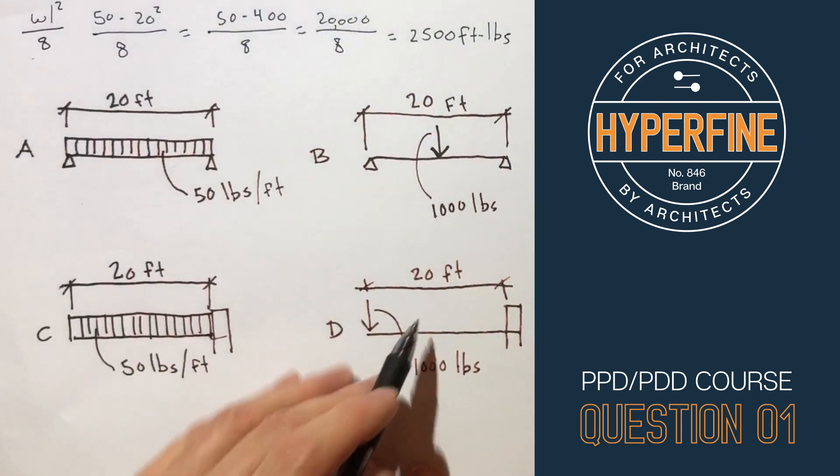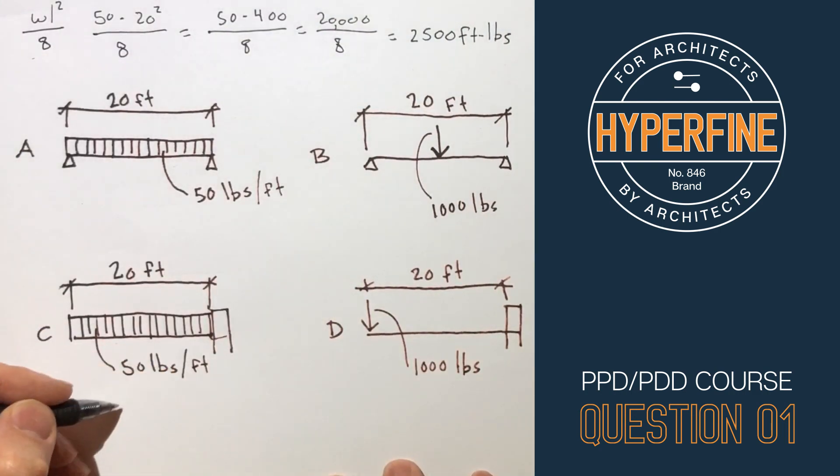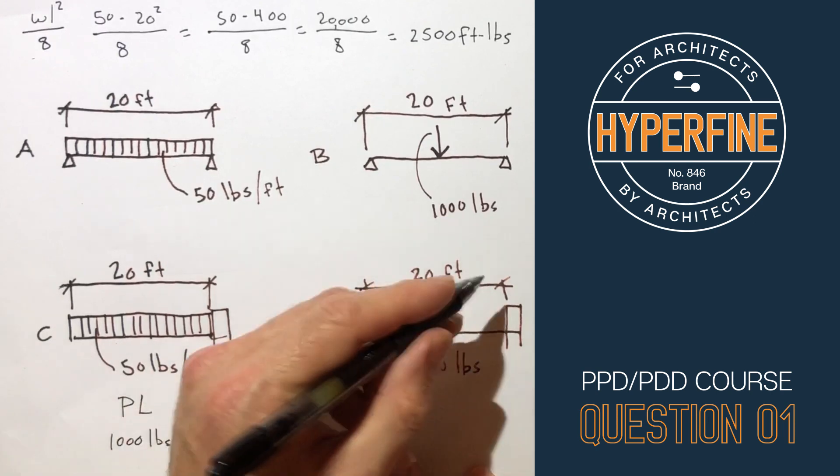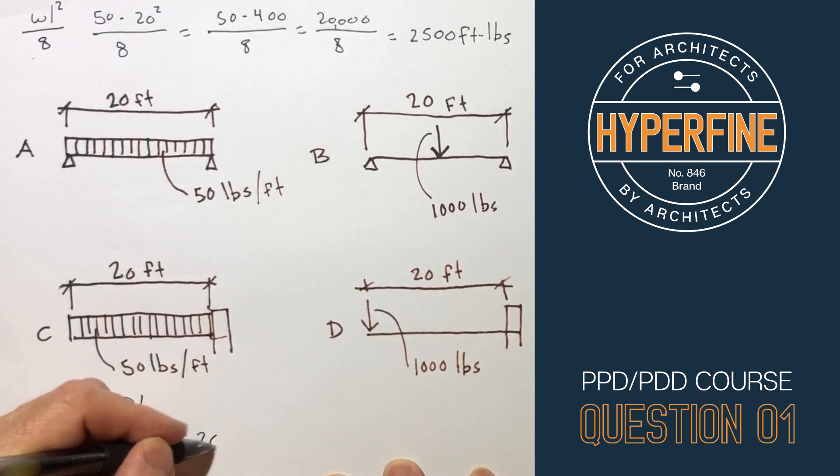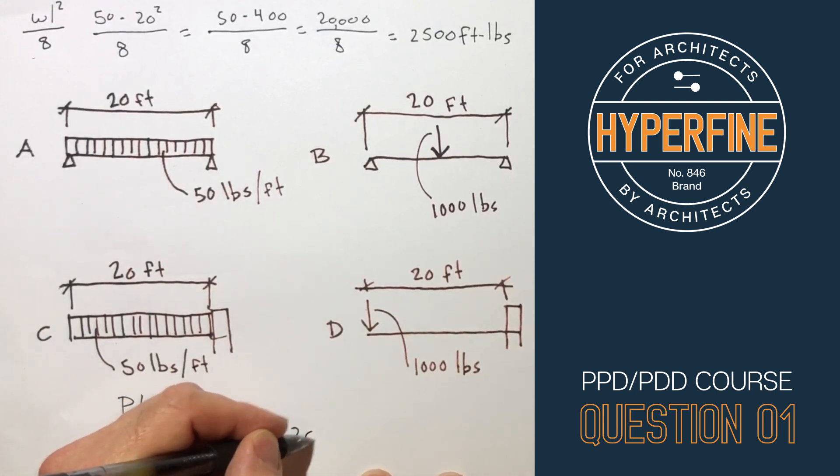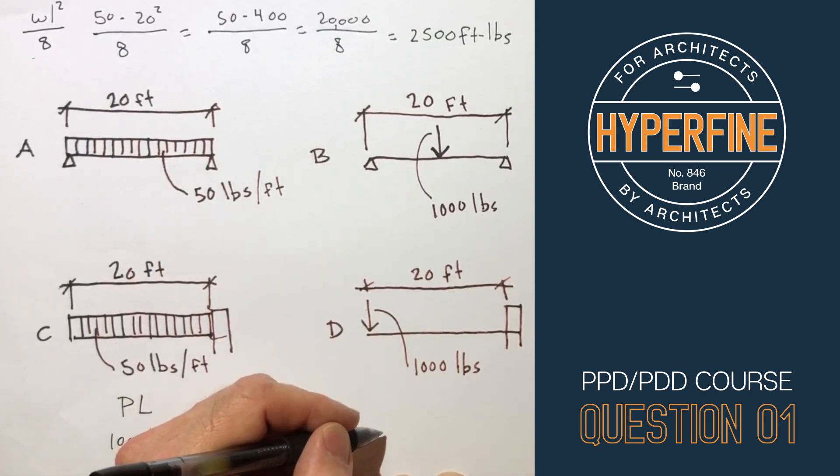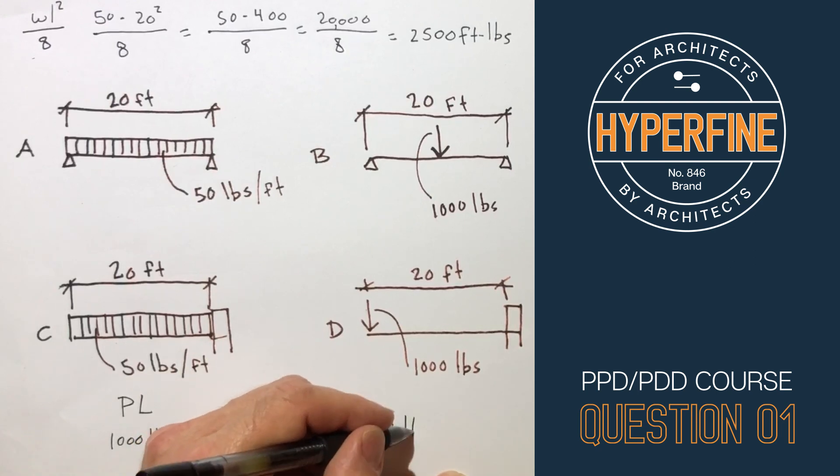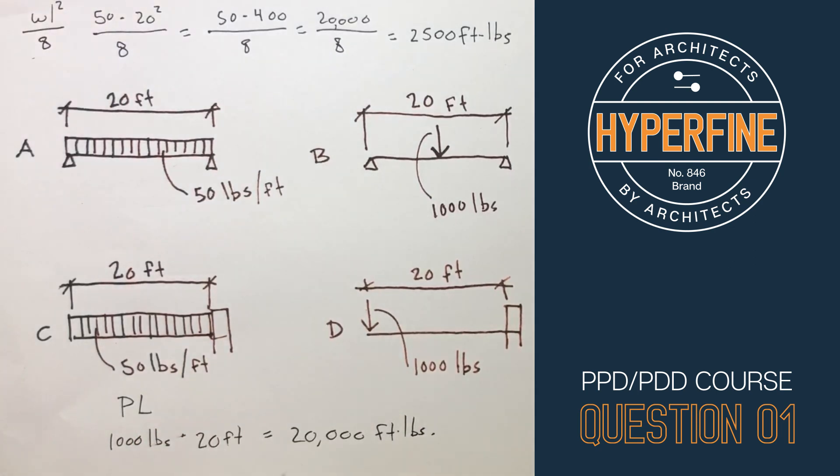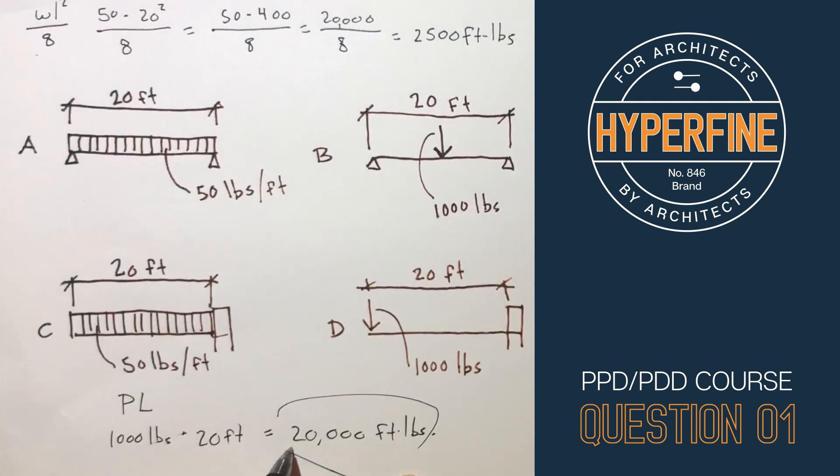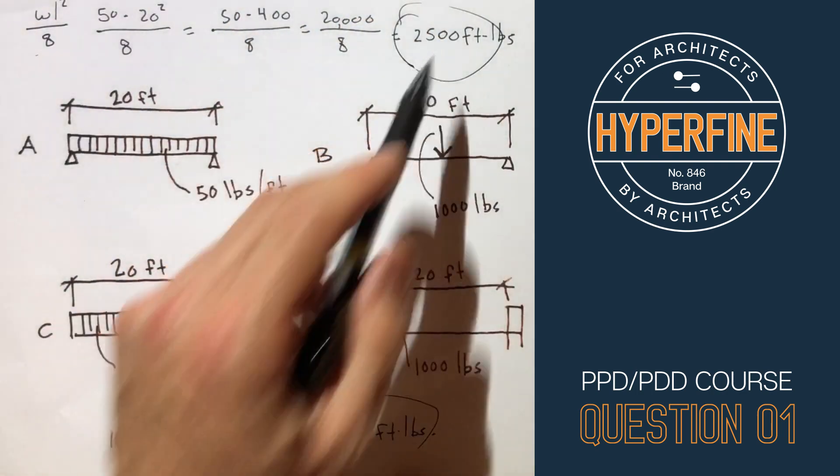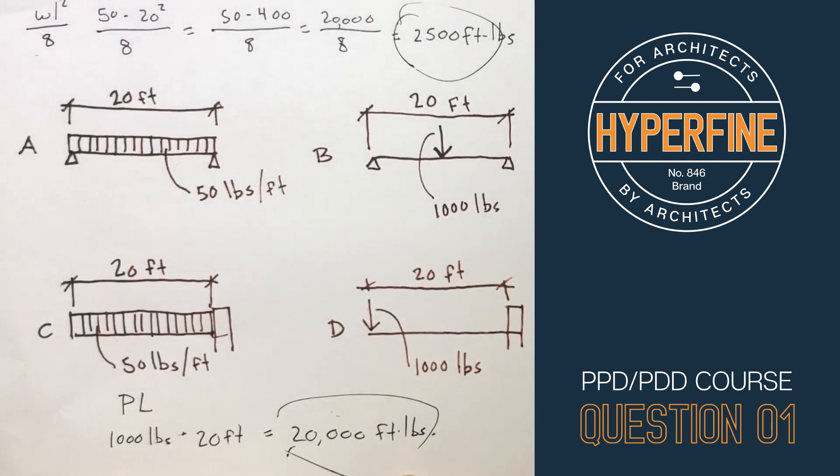If we're gonna do the math on this one, that was just PL. So P is the point load 1,000 pounds times the distance 20 feet equals 20,000 foot pounds. You see the maximum of this one is 20,000, the maximum of this one's only 2,500, so this one's almost 10 times higher.